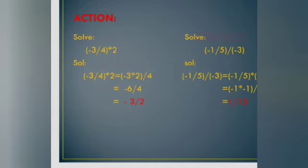Now multiplication. Solve minus 3/4 multiplied by 2. The numerator is minus 3 times 2 divided by 4, which gives minus 6 divided by 4. Simplifying, the answer is minus 3/2.